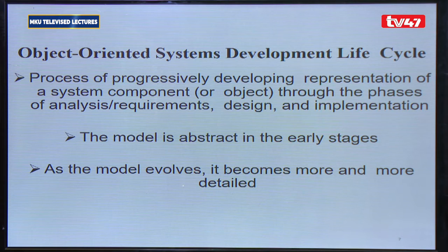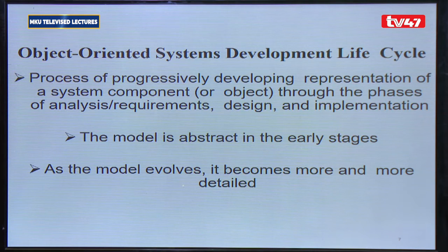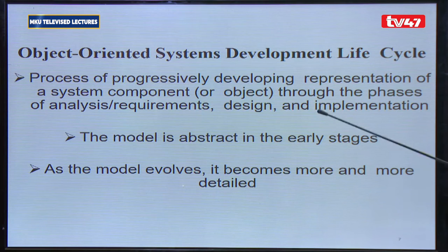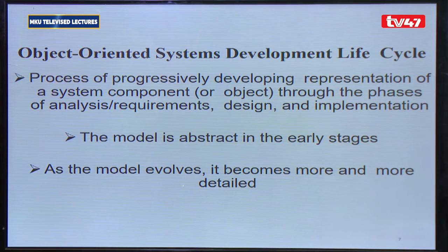It is progressive in that in analysis and design, we are building a representation of a system. In the first two stages — analysis and design — you come out with implementation specification, which is more of a system representation or system abstraction. What you get, the implementation specification, informs the third stage: implementation, or what we call coding.